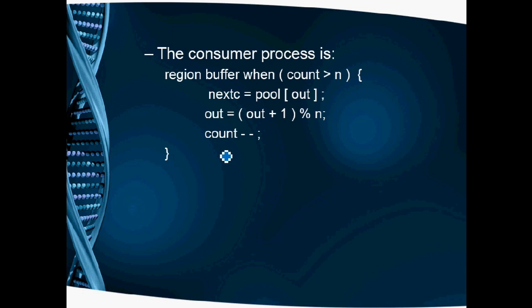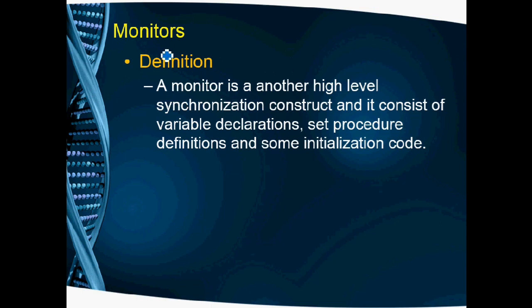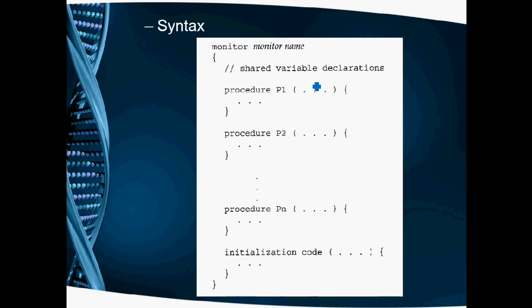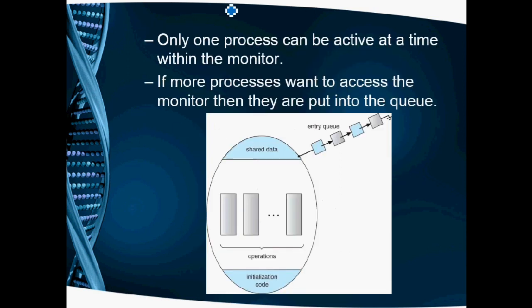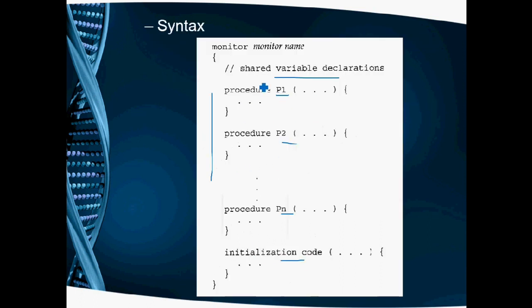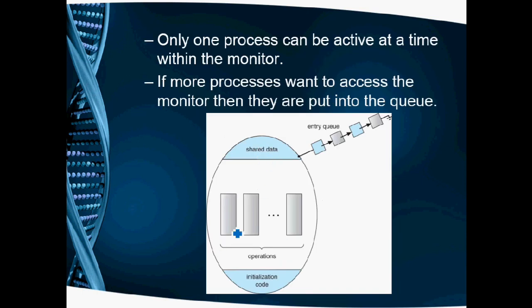The last topic is monitor. Like critical region, monitor is another high-level synchronization construct. It consists of three things: variable declarations, set of procedure definitions, and some initialization code. We have to name the monitor. Inside this monitor, we have shared variable declaration with the shared data, set of procedures or operations, and initialization code.